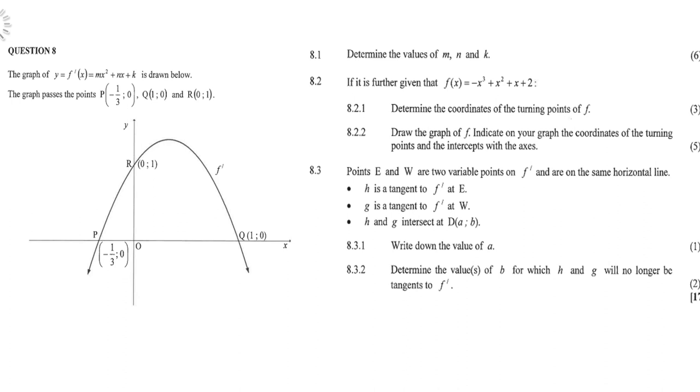It is further given that f of x is minus x cubed plus x squared plus x plus two. Determine the coordinates of the turning points of f, draw the graph of f, and indicate on your graph the coordinates of the turning points and the intercepts with the axes.